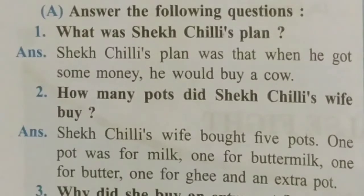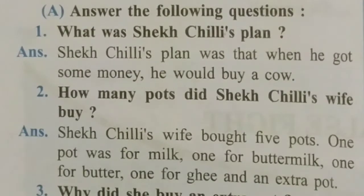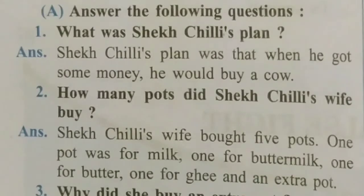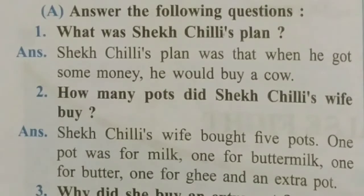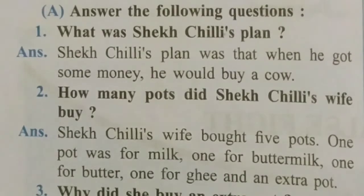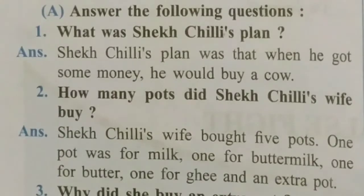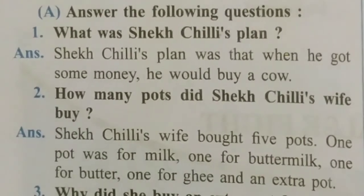From the comprehension, question one: What was Sheik Chilli's plan? Answer: Sheik Chilli's plan was that when he got some money, he would buy a cow. (Sheik Chilli ka plan tha ki jab uske paas kuch paise aayenge tab wo ek gaay khareed dega.)